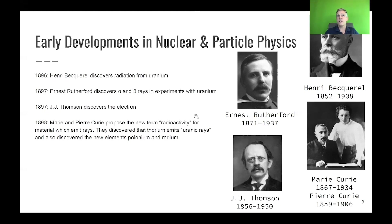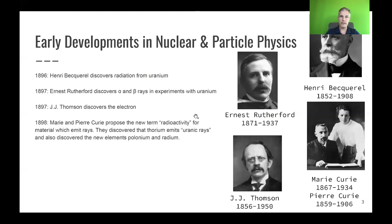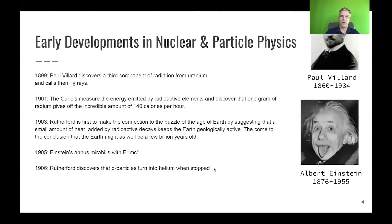Marie and Pierre Curie proposed the new term 'radioactivity' for materials which generally emit radiation, and they discovered additional radioactive materials beyond Becquerel's uranium — including thorium, polonium, and radium. Marie Curie measured the energy being radiated and found that a gram of radium can emit up to 140 calories per hour, essentially enough to provide the energy a person needs to survive.